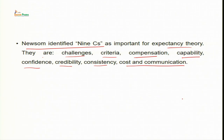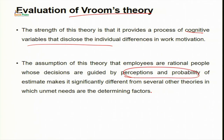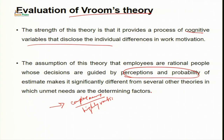However, the major limitation of Vroom's expectancy theory is that in practice people rarely make decisions in such a calculating and complex manner. The theory has also been questioned for its claim that people are highly rational and objective in deciding which tasks they will take up.